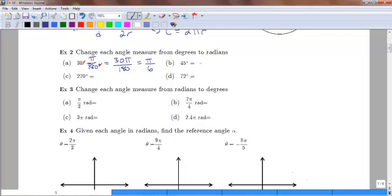We can do another example, 45 degrees. Again, we're going to multiply by π over 180 degrees. And then, again, you end up with 45π over 180. And if you reduce this fraction, you end up with π over 4.